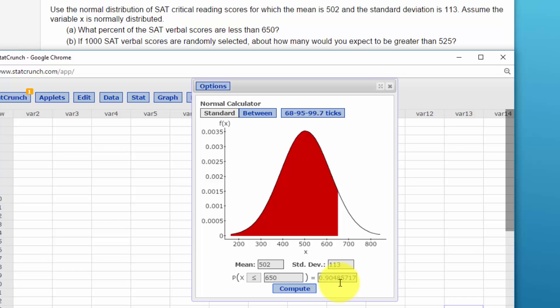650. Less than, I want everything to the left. And it's 90.48 percent would be expected to score less than 650. That's most of the people.